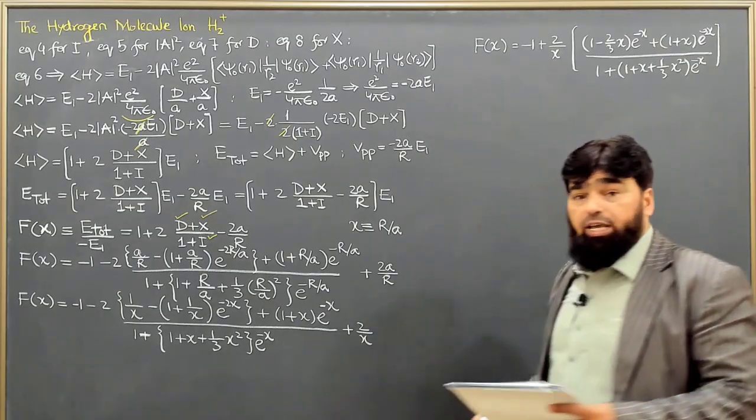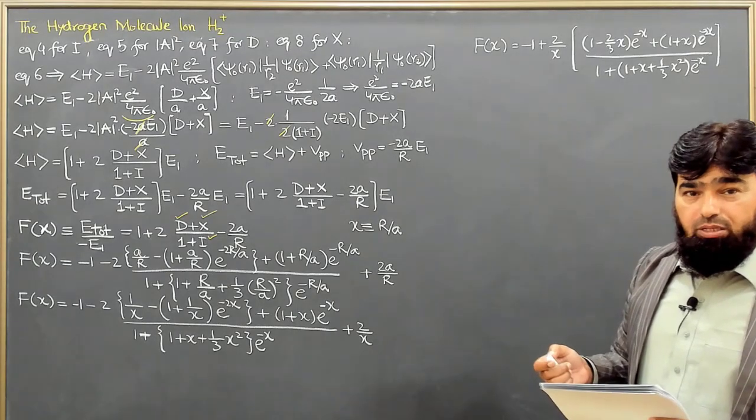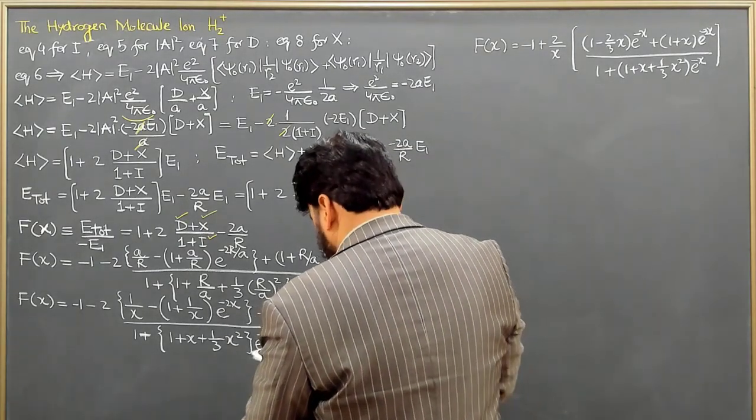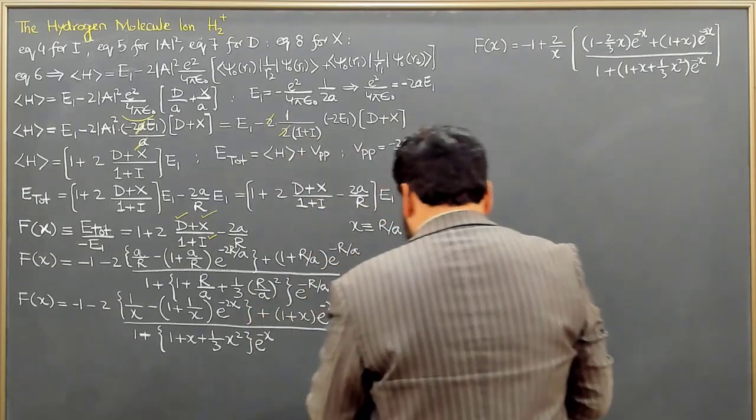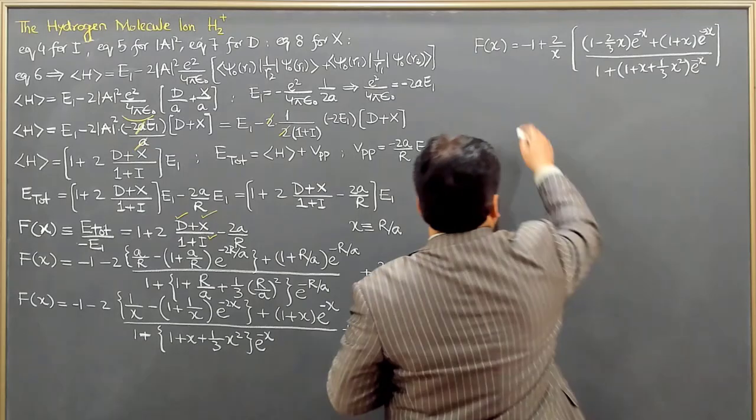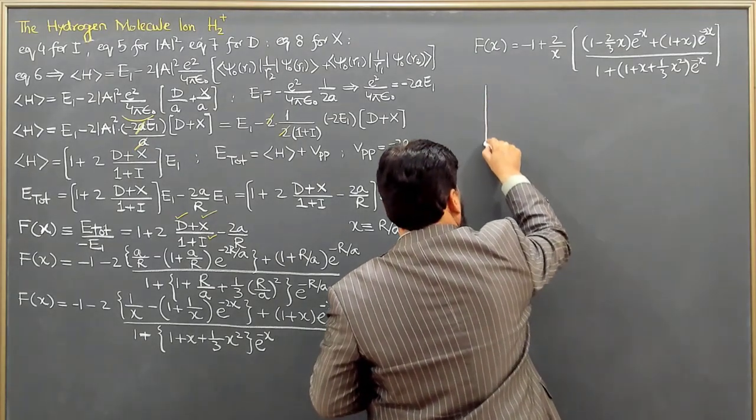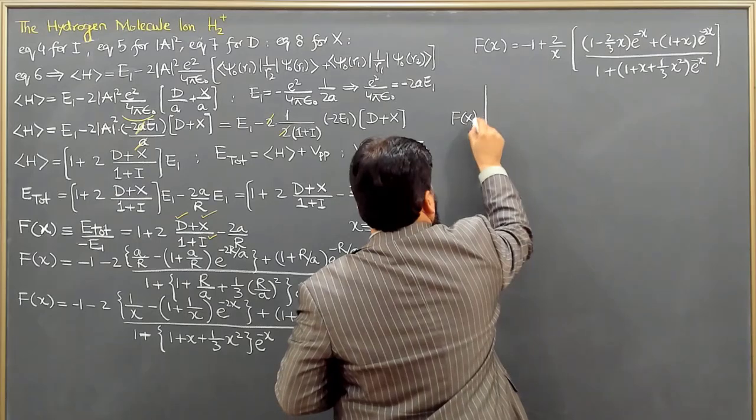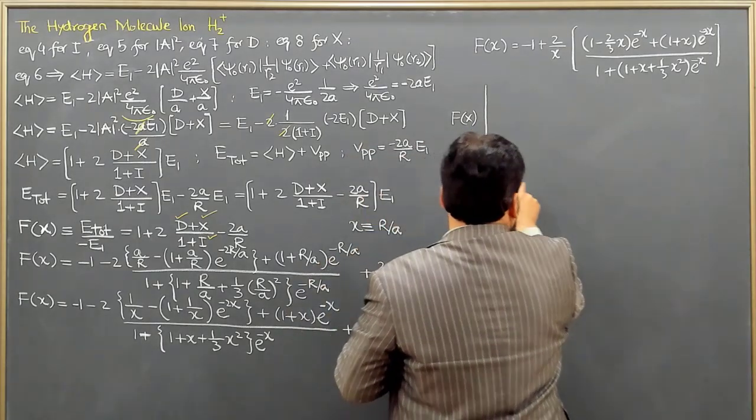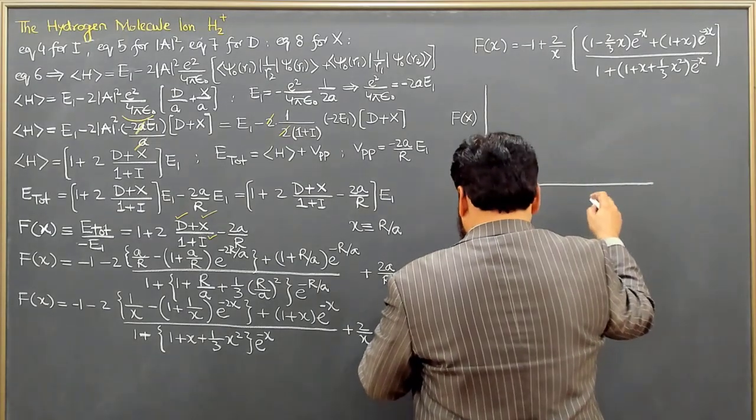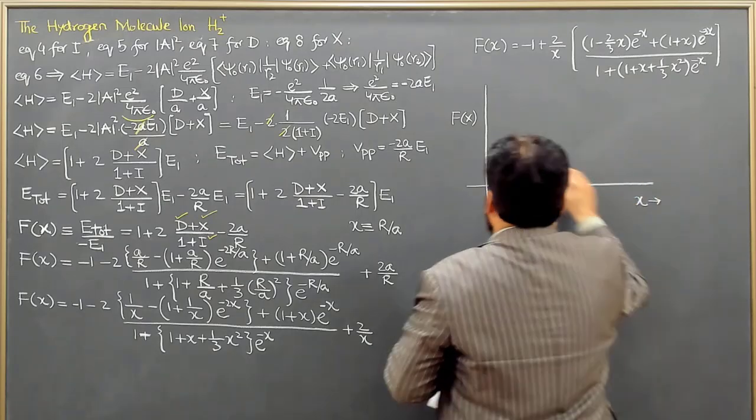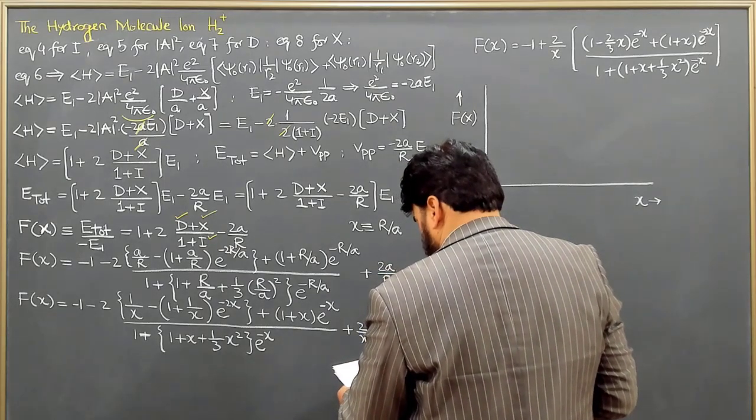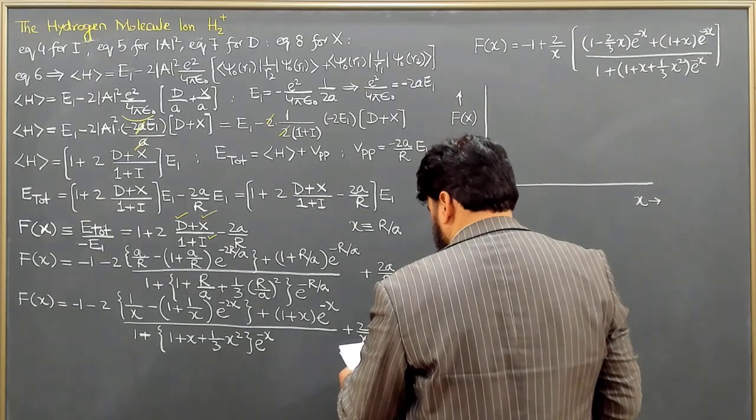And this is if I do plot this one: we have, we are plotting f of x against x here—f of x and x here. Now the values, this one is starting from 0 to 6.